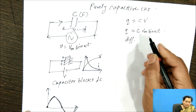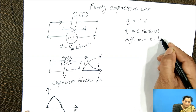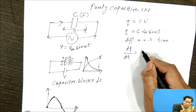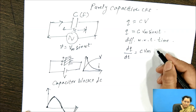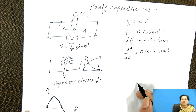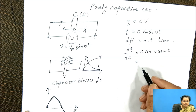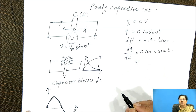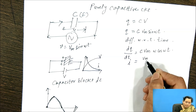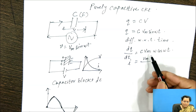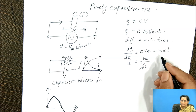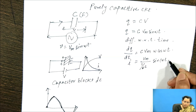Now differentiate this equation with respect to time. Differentiating gives dQ/dt equal to C Vm times the derivative of sin omega t, which is omega cos omega t. Since dQ/dt is the rate of flow of charges, it equals the current I. We can write this as Vm divided by 1/(omega C), and cos omega t can be written as sin(omega t + pi/2).